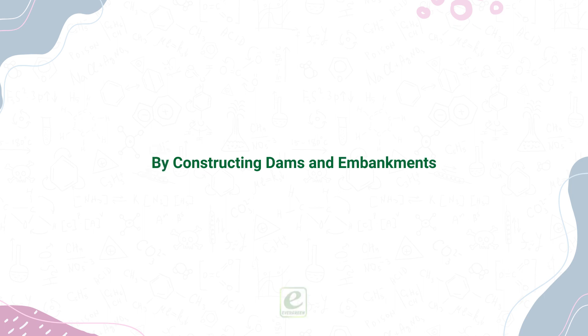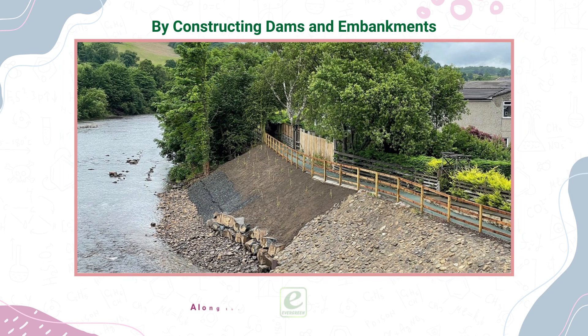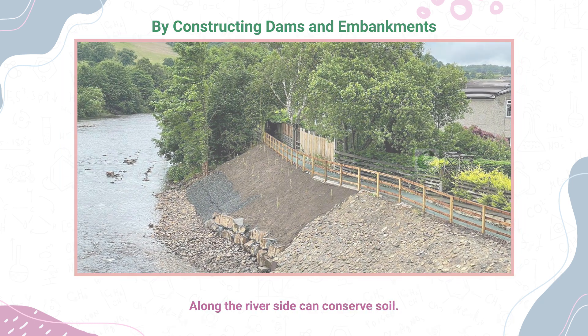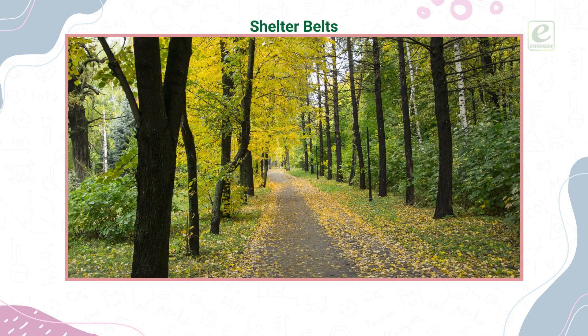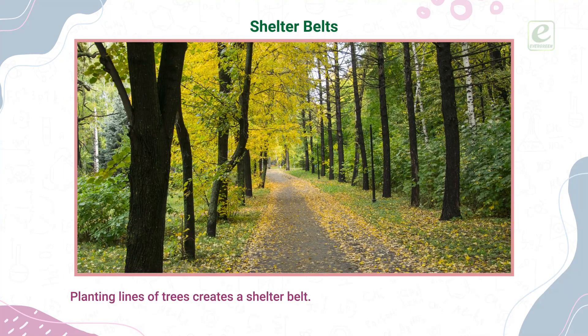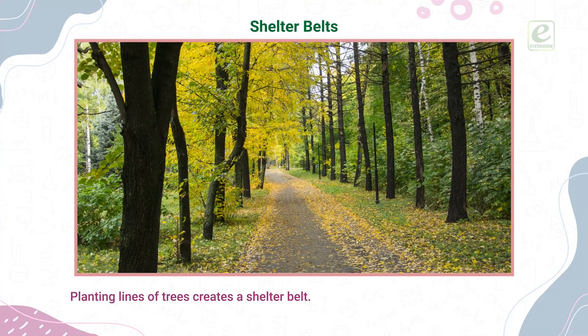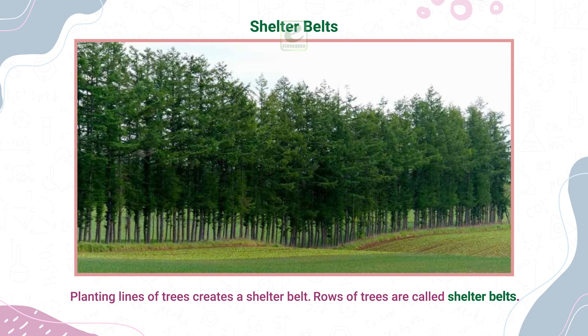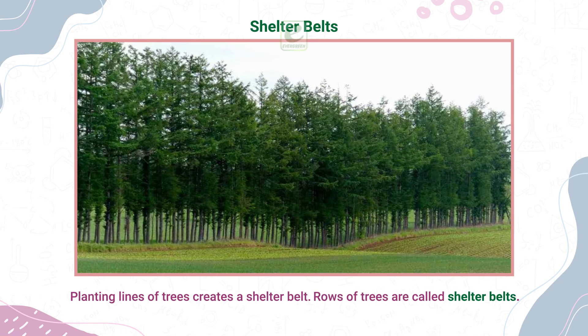By constructing dams and embankments along the riverside, we can conserve soil. Shelter Belts — planting lines of trees creates a shelter belt. Rows of trees are called shelter belts.